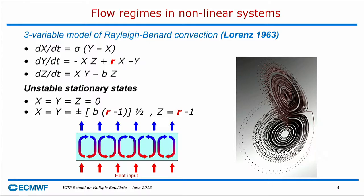Physically, this system has a chaotic attractor in a certain range of parameters, shaped by three stationary solutions. One corresponds to no motion and is strongly unstable, so we never see that state on the attractor. The other two are only weakly unstable and are at the center of the two wings of the attractor. The system is time-evolving but has two preferred regions in phase space — regions around two unstable stationary solutions — and we can think of the two wings of the Lorenz attractor as representing flow regimes around the two unstable equilibria.